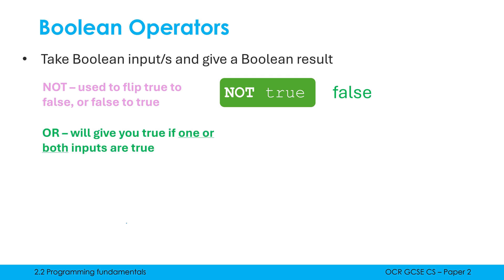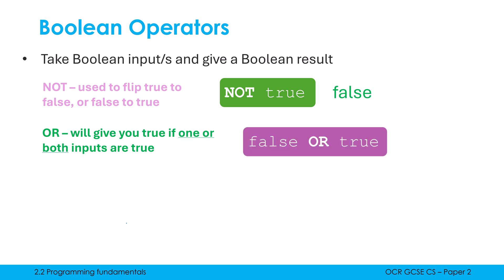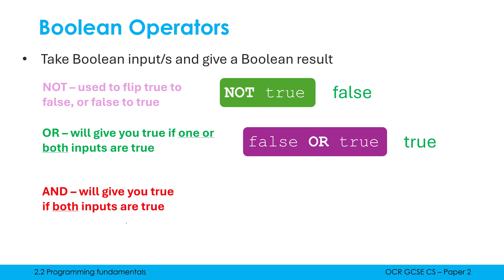Boolean OR takes in two inputs and will give you true if one or both inputs are true. So it's quite relaxed — only one side needs to be true for the whole thing to be true. So here, false OR true would give us true overall, whereas AND is a lot stricter.